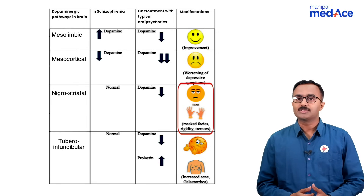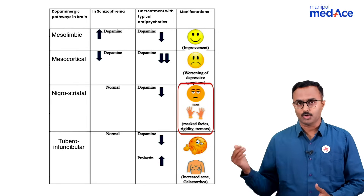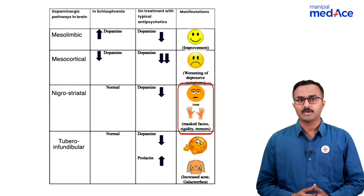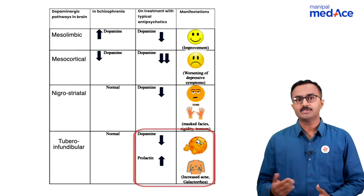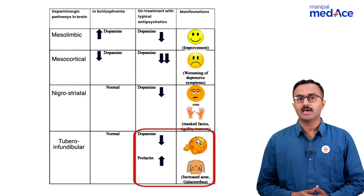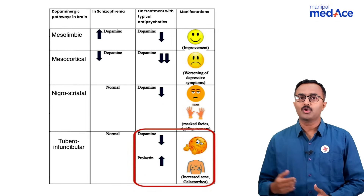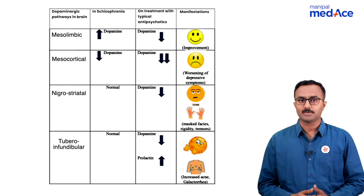Causation of extrapyramidal symptoms because of dopaminergic blockade in the nigrostriatal pathway. Increased prolactin, resulting in galactorrhea, decreased libido, and acne while acting on the tuberoinfundibular pathway.